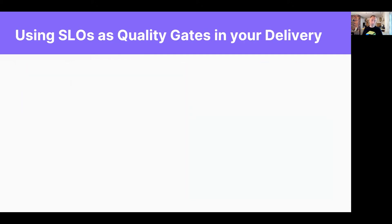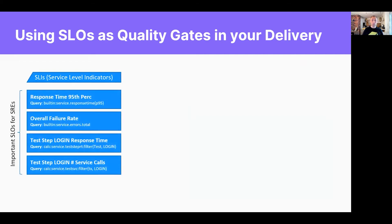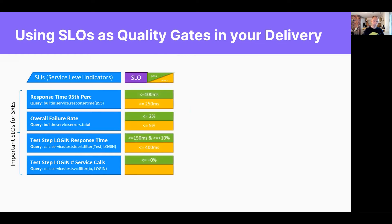Let me give you an example. We all know SLIs and SLOs by now. The way we want to do this is: you can specify important SLIs that you want to enforce as part of your quality gates — whether this is response time, failure rates, response time of a particular transaction you're testing, number of database calls, number of backend service calls. You specify your SLIs — the metrics that are interesting and that you want to automatically evaluate — and they can come from one tool or different tools. Then you specify your SLOs, the objectives. If you know your objective in production and you know what type of load and tests you run in pre-prod, you can probably infer what your SLOs in pre-prod should be.